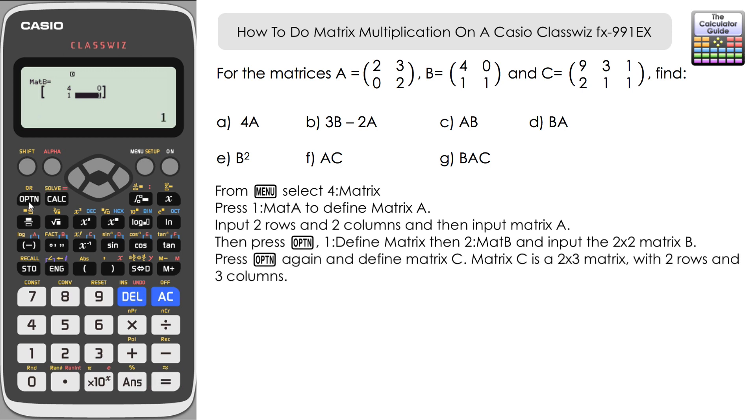Option again, and lastly, we're going to define matrix C. Slightly different here, it's 2 rows and 3 columns for matrix C. 2 rows and 3 columns, 9, 3, 1, 2, 1, 1.